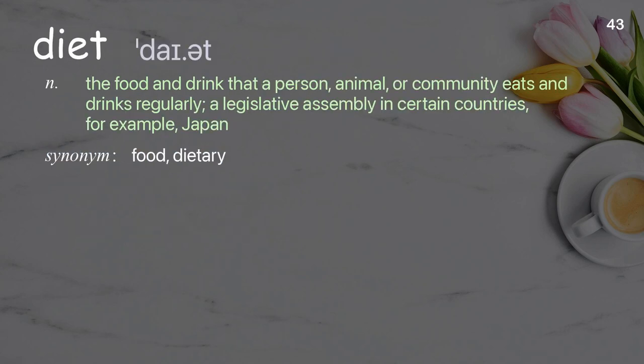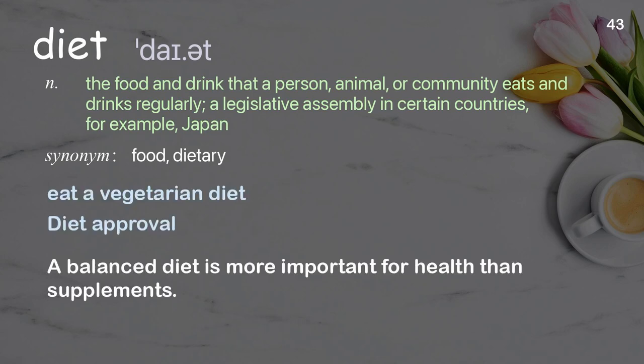Diet. The food and drink that a person, animal, or community eats and drinks regularly; also a legislative assembly in certain countries, for example Japan. Examples: eat a vegetarian diet, diet approval. Sentence: A balanced diet is more important for health than supplements.